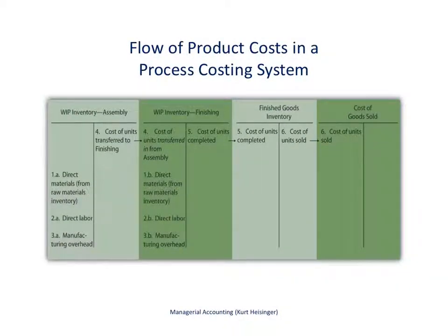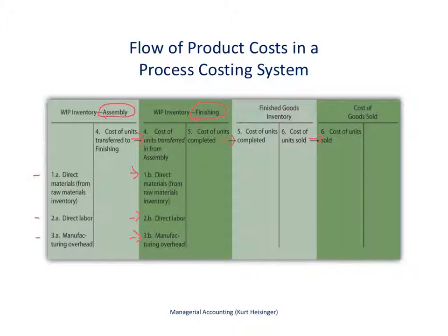Here is a summary of the flow of costs through each of our production departments. Assuming we have an assembly department followed sequentially by a finishing department, each has direct materials, direct labor, and manufacturing overhead costs debited to it. As products move from assembly into finishing, all costs related to those products get added to the finishing department, which then incurs its own additional direct materials, direct labor, and overhead costs. Once units are completed, those costs move to finished goods inventory, and once goods are sold, costs move to cost of goods sold. This is a summary of how costs flow through a typical process costing system.